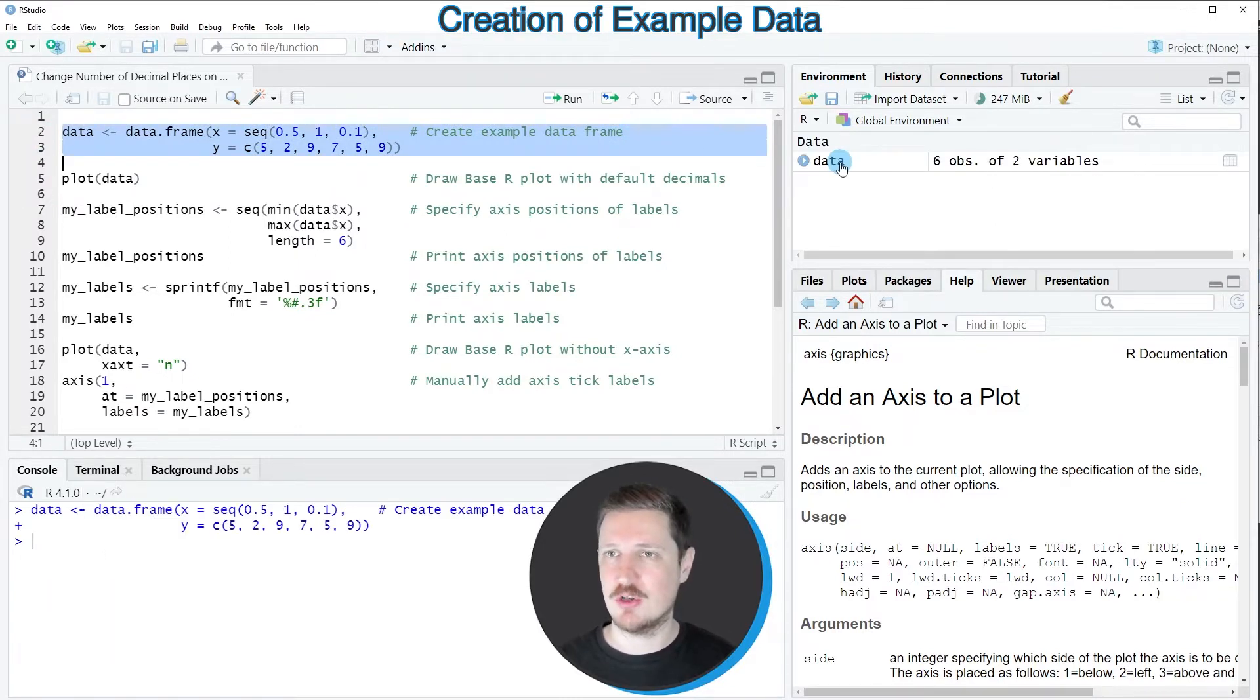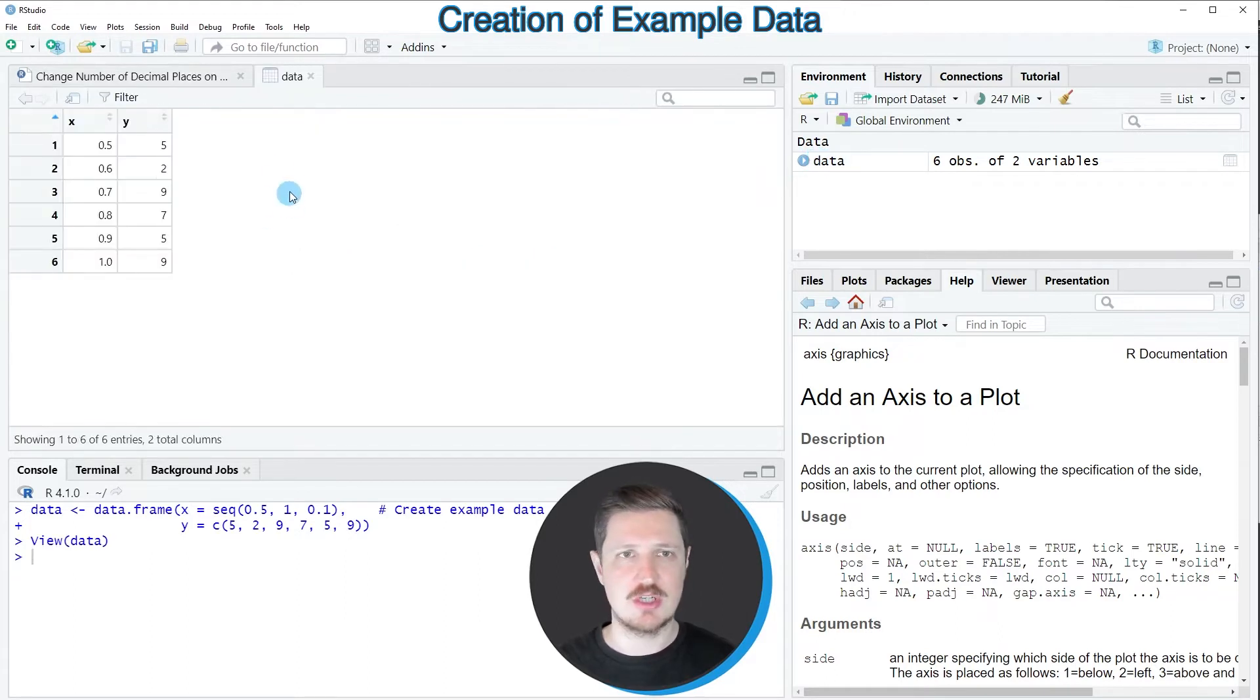a new data frame object called data is appearing at the top right. And if we click on this data object, a new window is open, which is showing the structure of our data frame. And as you can see, our data frame contains six rows and the two numeric columns x and y.